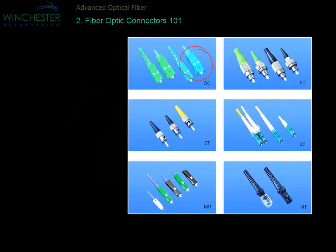The technology in all these connectors is basically the same. The SC is a push-pull style connector. The FC is a threaded connector — Frank Charlie — used in applications where you don't want the fiber to be disconnected at all. The ST, which is one of the earliest connectors used in data communications and still widely used in broadcast, is a quarter-turn bayonet style. The LC is the most popular connector today in fiber optics, whether it's telecom, datacom, or many other applications.